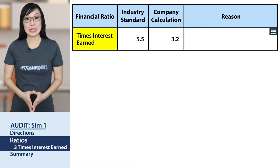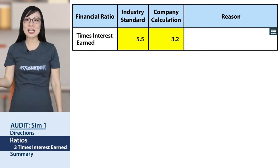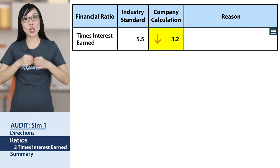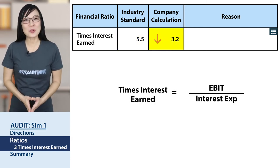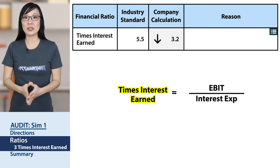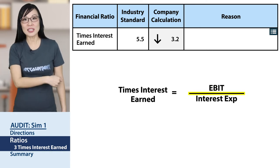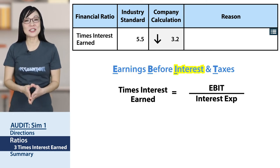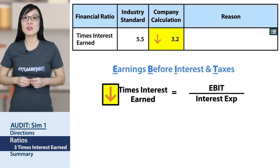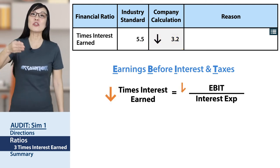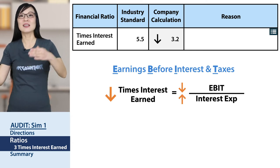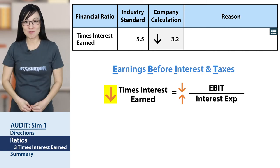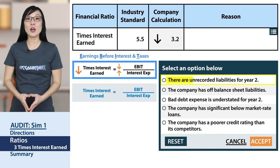Next ratio: times interest earned. Industry standard 5, company's calculation 3. The company's number is lower. Times interest earned equals EBIT divided by interest expense — where EBIT stands for earnings before interest and taxes. The company's number is lower than the industry standard, so either EBIT is lower or interest expense is higher, because both of these make times interest earned lower.